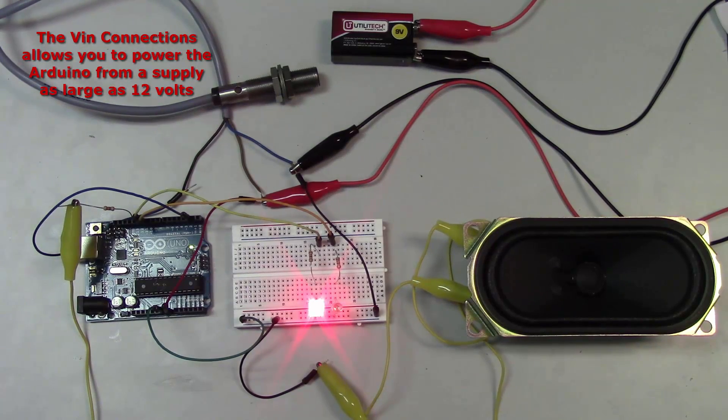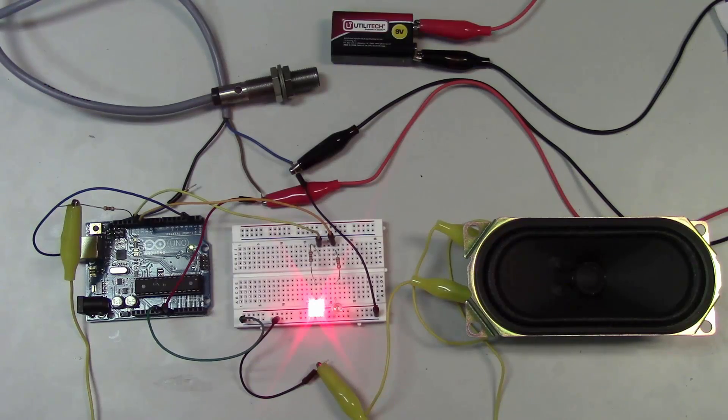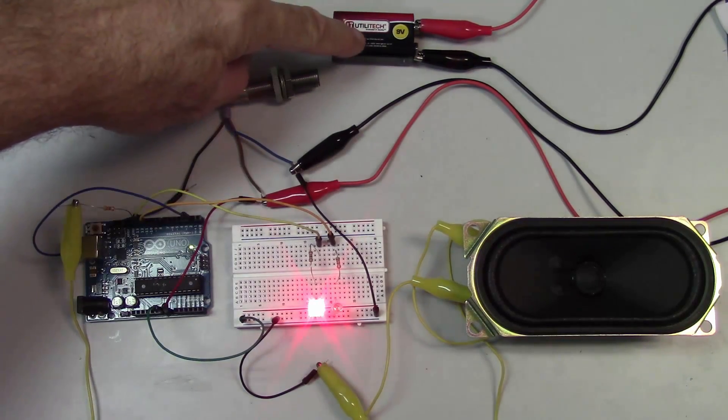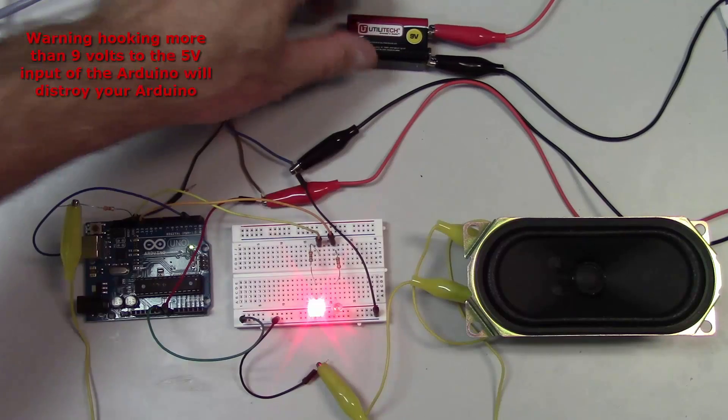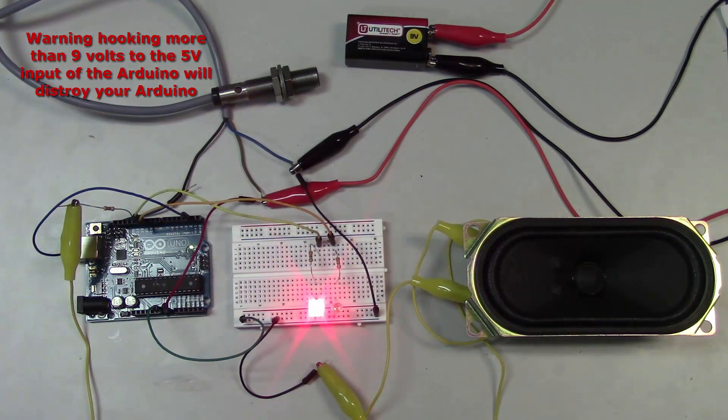And that voltage becomes regulated by the built-in regulator on the Arduino to 5 volts. And what you got to be careful of here is you do not want to mix the 9 volt battery voltage with the 5 volts on the Arduino.